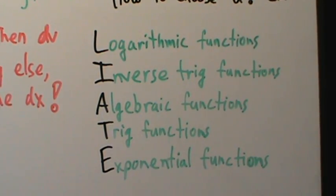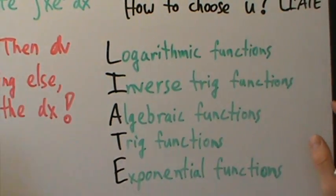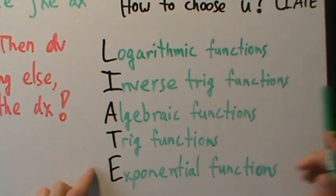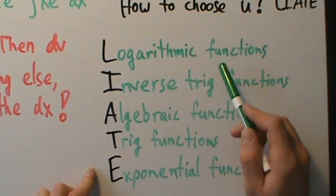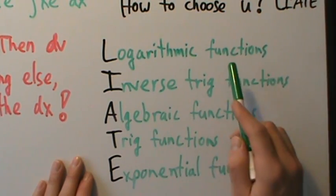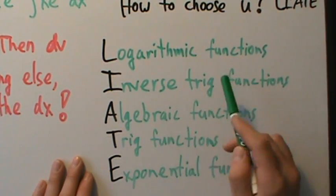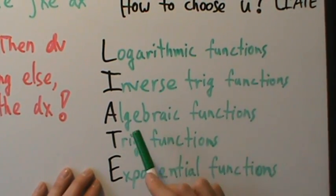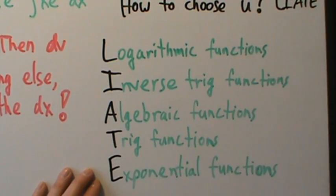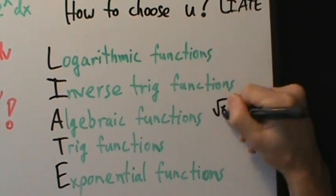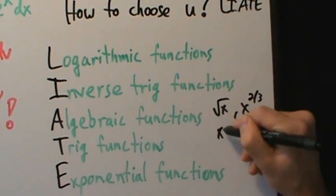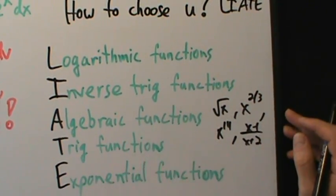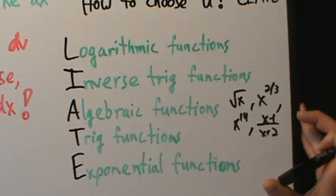Go down the LIATE list and choose u to be the first type of function that appears. Logarithmic functions are things like natural log of x or log base 2 of x. Inverse trig includes arc sine, arc tangent, arc secant, arc cosecant, arc cotangent. Algebraic functions include polynomials, rational functions, square roots, and fractional powers — things like √x, x^(2/3), x^14, or (x−1)/(x+2). Trig functions are sine, cosine, tangent, secant, cosecant, cotangent. Exponential functions are things like e^x, 5^x, 1.7^x.